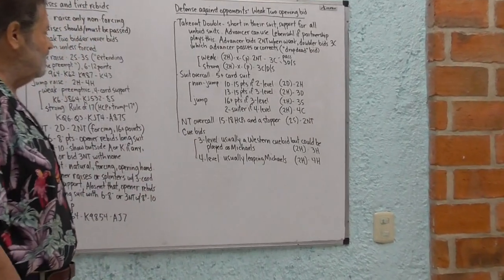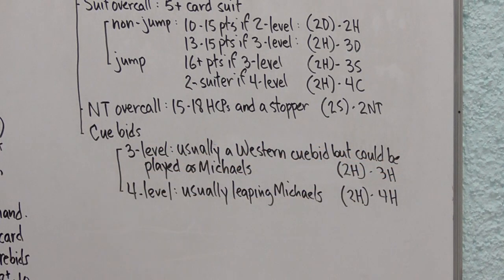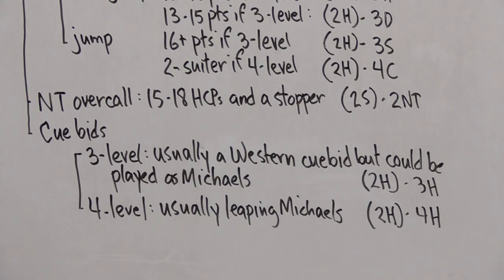And then finally, we can make cuebids of the weak two bid. If we do that at the three level, such as two hearts from our right hand opponent, a three heart bid at this point could have one or two meanings depending on partnership agreement. It's usually what's called a western cuebid, which is asking partner to bid three no trump with a heart stopper. But some people would play this as a Michaels cuebid, so it would be showing spades and an undisclosed minor. On the other hand, if it's a jump cuebid, if you make the cuebid at the four level, this is usually a Leaping Michaels again. So a two heart bid on my right, four hearts for me is showing five five shape in the minors, for example. Leaping Michaels is an interesting topic, but it's not our main topic today, so I'm not going to spend much more time talking about it.